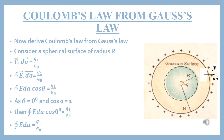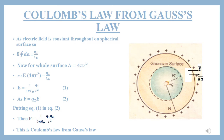तो ∮E·dA cos(0°) = q1 / ε₀. As cos(0°) = 1, तो ∮E·dA = q1 / ε₀. क्यूँके इस spherical surface पे electric field throughout same है, तो electric field constant है, इसको हम integral से बाहर निकालेंगे. So, E ∮dA = q1 / ε₀. And area = 4πR². So, E × 4πR² = q1 / ε₀. So, E = (1 / 4πε₀) × (q1 / R²). This is Equation 1 — the equation of electric field intensity of a charge.